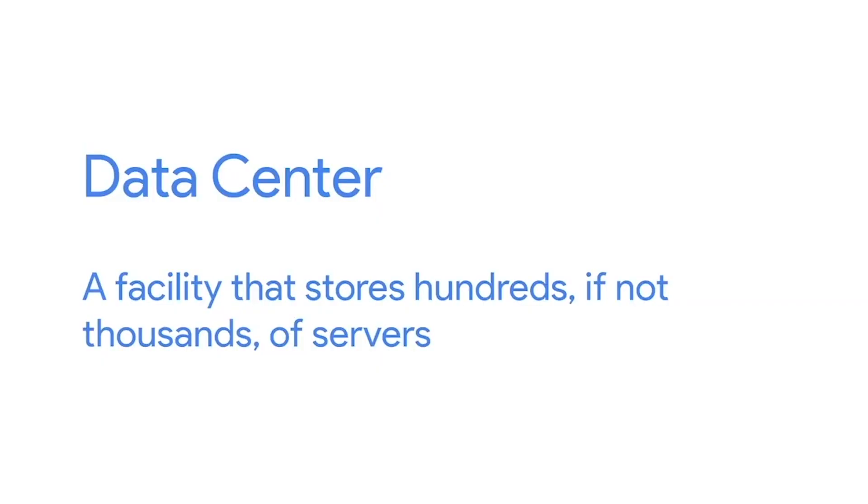You might have heard the word data center before. A data center is a facility that stores hundreds, if not thousands, of servers. Companies with large amounts of data have to keep their information stored in places like data centers. Large companies like Google and Facebook usually own their own data centers because they have billions of users that need access to their data at all times. Smaller companies could do this too, but usually rent out parts of a data center for their needs. When you use a cloud service, this data is typically stored in a data center or multiple data centers.